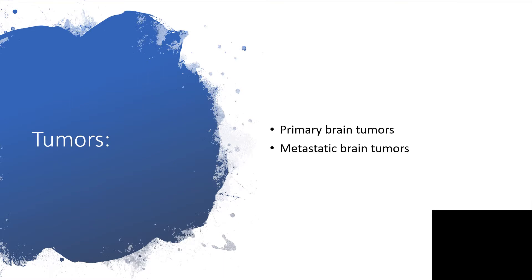Tumors — brain tumors, metastatic brain tumors secondary to the brain, or primary brain tumors — could all lead to seizure disorders. As a matter of fact, when an elderly person comes down with a seizure disorder for the first time, we need to work very hard to rule out brain tumors. If somebody is older than 50 years old and presenting with convulsions for the first time, let's rule out brain tumors.